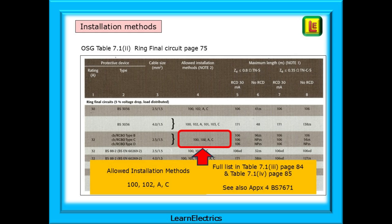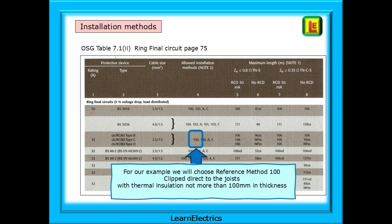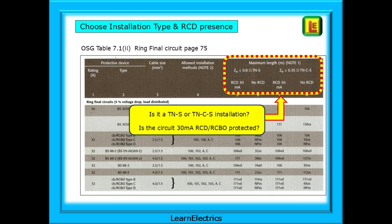The table tells us that methods 100, 102, A and C are acceptable. The full list of methods is shown in the On-Site Guide on pages 84 and 85, and also in Appendix 4 of BS 7671. For our example, we'll choose reference method 100 - clipped direct to the joists, with thermal insulation not more than 100 millimetres in thickness. Still on page 75, now we should choose the installation earthing system and establish if the circuit is 30 milliamp RCD protected, if it is a TT system.